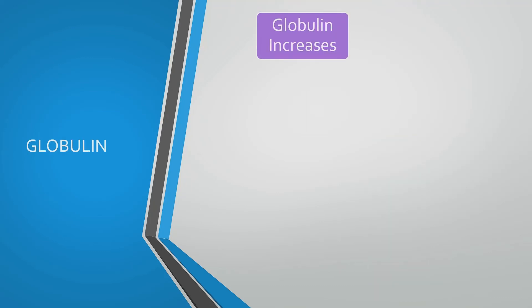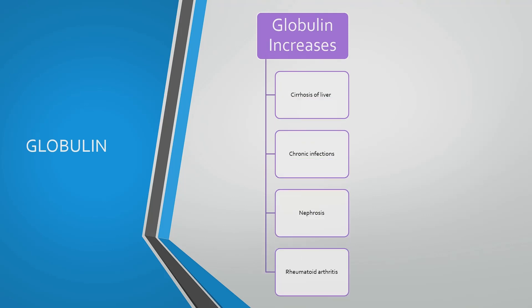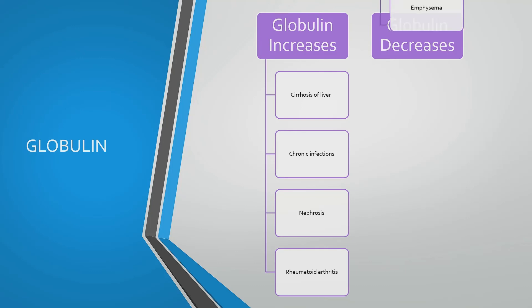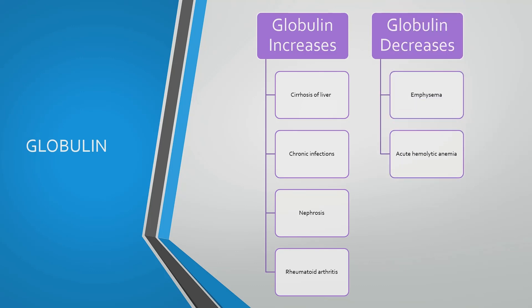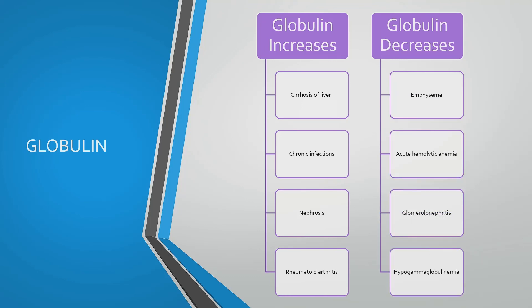The level of globulin increases in the following conditions: cirrhosis of the liver, chronic infections, nephrosis, and rheumatoid arthritis. The level of globulin decreases in the following conditions: emphysema, acute hemolytic anemia, glomerulonephritis, and hypogammaglobulinemia.